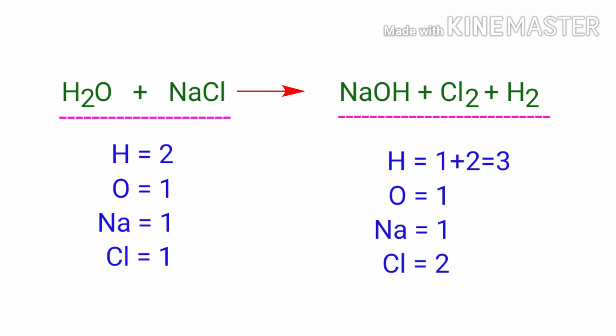On the products side, there are three hydrogen atoms, one oxygen atom, one sodium atom, and two chlorine atoms present. The number of atoms are not balanced on both sides.